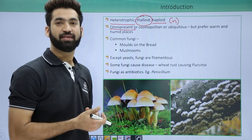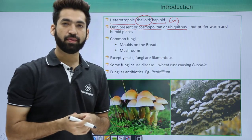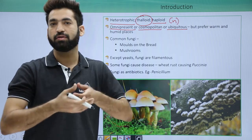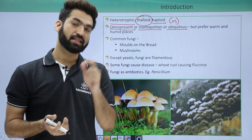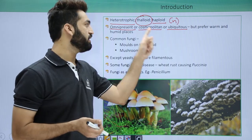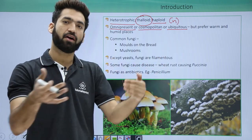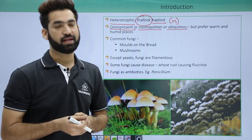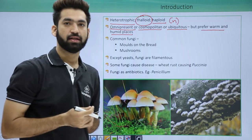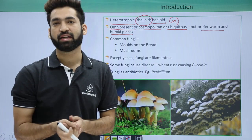Remember these two important words: cosmopolitan and ubiquitous — meaning organisms found everywhere. Bacteria are also cosmopolitan. Fungi are cosmopolitan in nature, found in almost every place. But they always prefer warm and humid conditions.